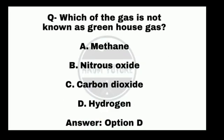Last question: Which gas is not known as a greenhouse gas? The answer is hydrogen. Hydrogen has atomic number one.